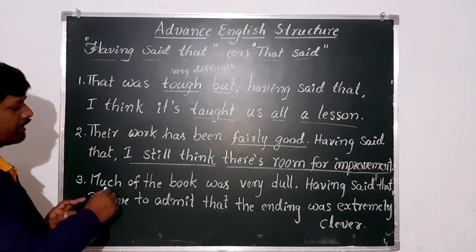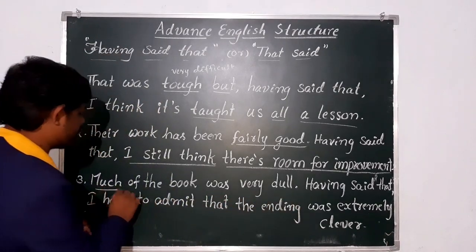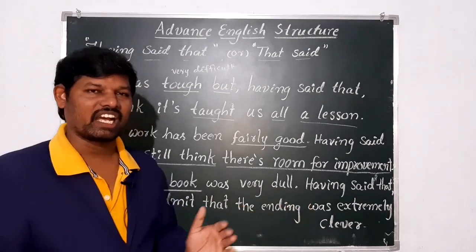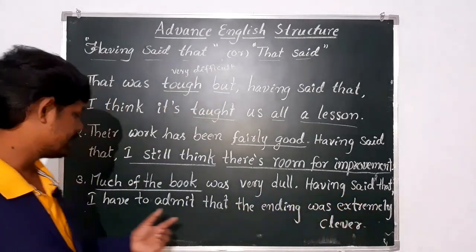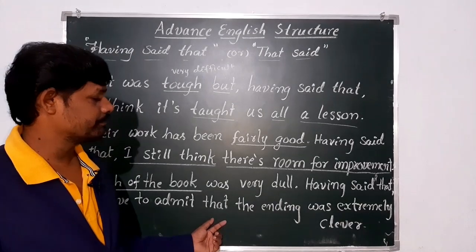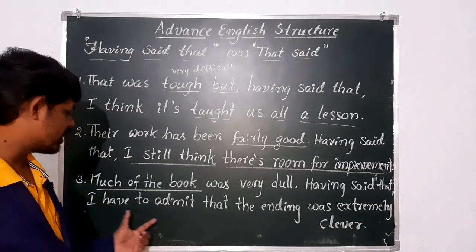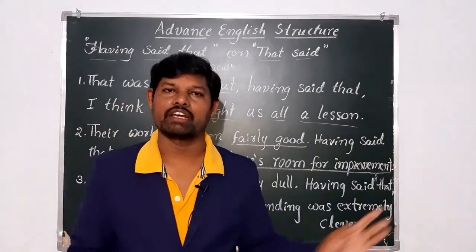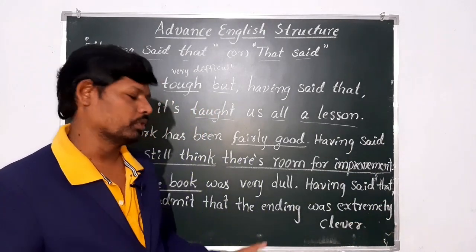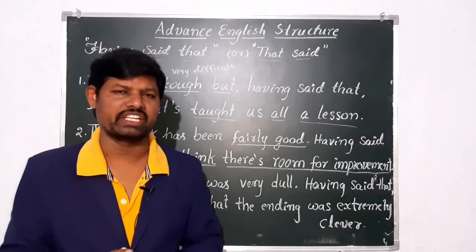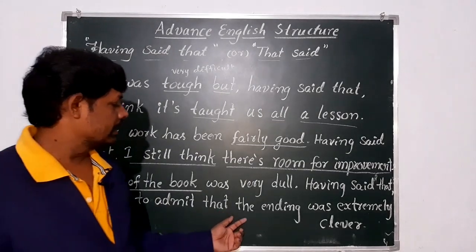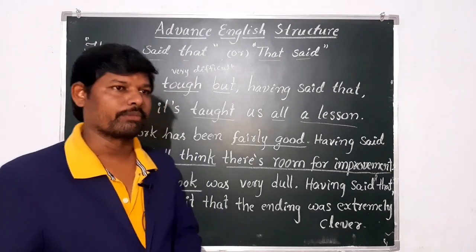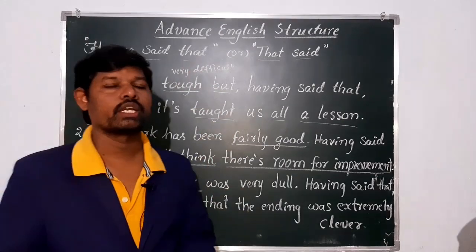And next one: 'Much of the book was very dull.' Much of the book was very dull. Having said that — 'Having said that, I have to admit that the ending was extremely clever.' The ending of the book was very clever. So this phrase 'having said that' is connecting the two contrasting ideas.